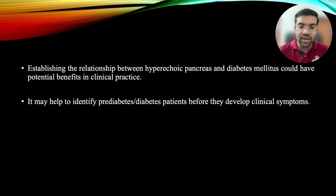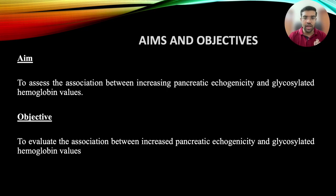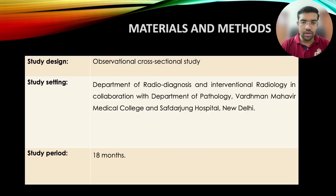Establishing the relation between hyperechoic pancreas and diabetes could have potential benefits in clinical practice. It helps to identify pre-diabetes and diabetes patients before they develop clinical symptoms. Aim and objectives: to assess the association between increasing pancreatic echogenicity and glycosylated hemoglobin values.